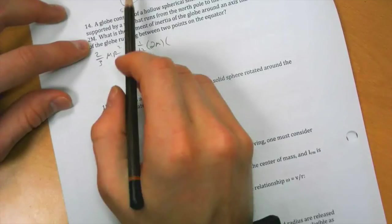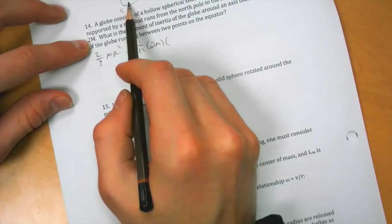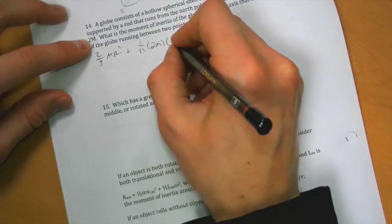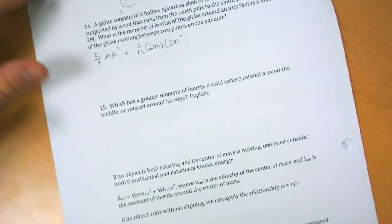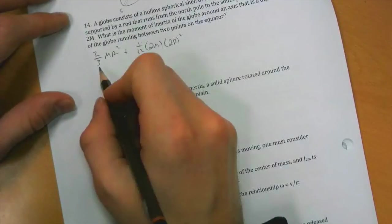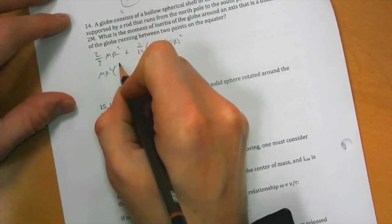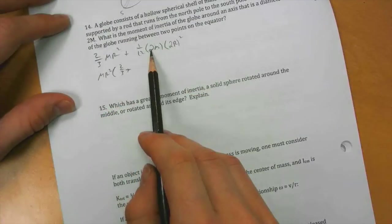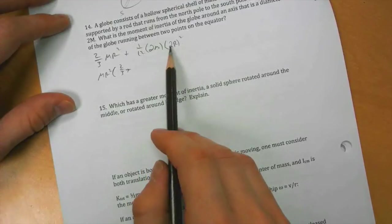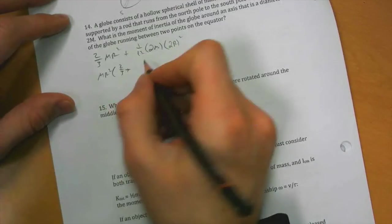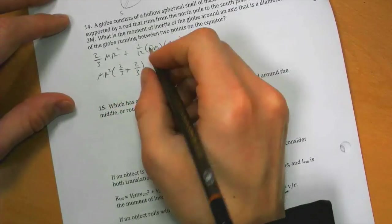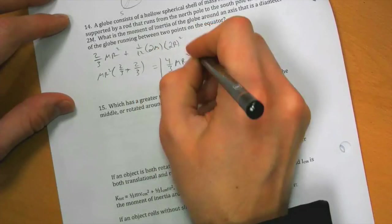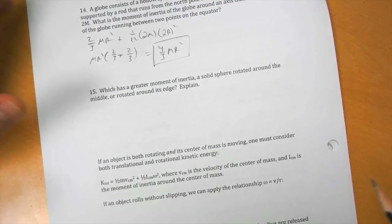And l, well, if it runs from the north pole to the south pole, then the length of the rod is 2 times the radius of the globe. And then we can calculate that by doing some fraction addition, so both of these have an m r squared, and that's two-thirds plus, what is this? One-twelfth times 2 is one-sixth times 4, four-sixths is two-thirds again, huh, how about that? That was actually not intentional. So the total moment of inertia of this collection is four-thirds m r squared around that particular axis.